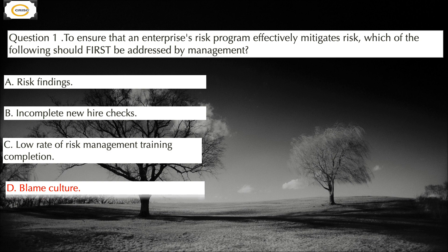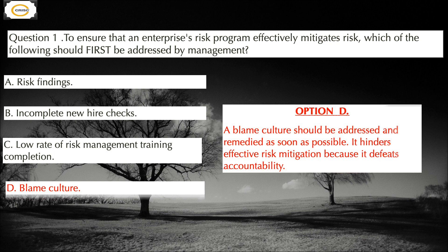Let's discuss the incorrect options. Option A, risk finding: addressing risk findings will not be as smooth and effective in a blame culture as in an enterprise that does not have a blame culture. Option B, incomplete new hire checks: this is a consideration, but not as important as addressing the blame culture. Option C, low rate of risk management training completion: this is also a consideration, but again not as important as addressing the blame culture. Option D, blame culture, is correct because it should be addressed and remedied as soon as possible — it hinders effective risk mitigation by defeating accountability.